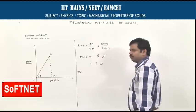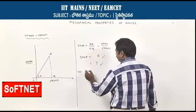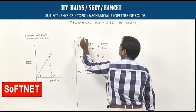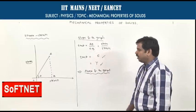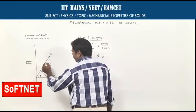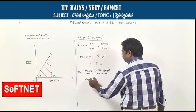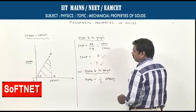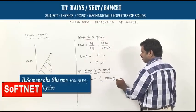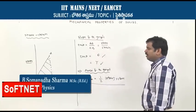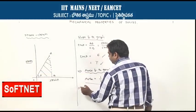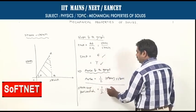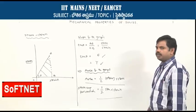The area under the stress-strain graph is like a triangle: area = half × base × height = half × strain × stress. This area gives the strain energy or elastic energy per unit volume, equal to (1/2) × stress × strain. This is another important conclusion from the stress-strain graph.